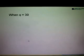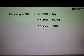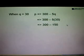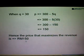When Q equals 30, the question asks us to find the price. So we substitute Q equals 30 into the function P equals 300 minus 5Q. We get 300 minus 5 times 30 equals 150. Hence, the price that maximizes the revenue is 150 ringgit.